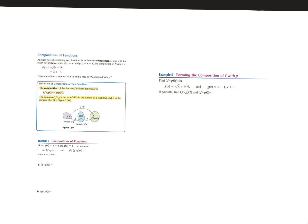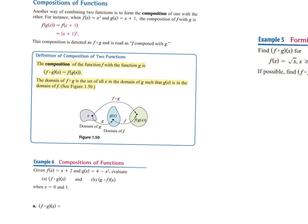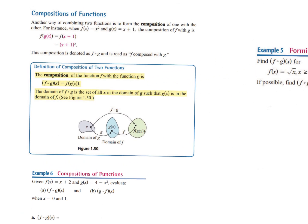All right, everybody with me? 1.5, we're going to do the second part. Last week we talked about combinations — putting things together, adding, subtracting, multiplying, and dividing. We had domain restrictions when there was something in the denominator that we had to worry about. We're going to talk today a little bit about domain as well, but we're going to focus on something called compositions of functions.